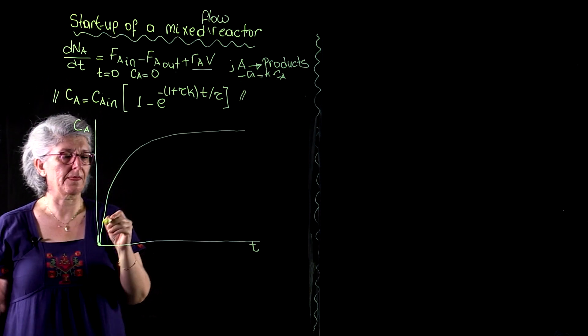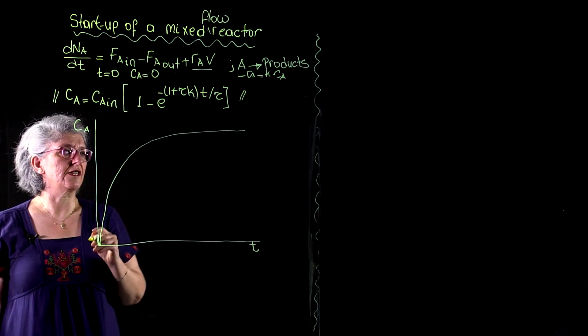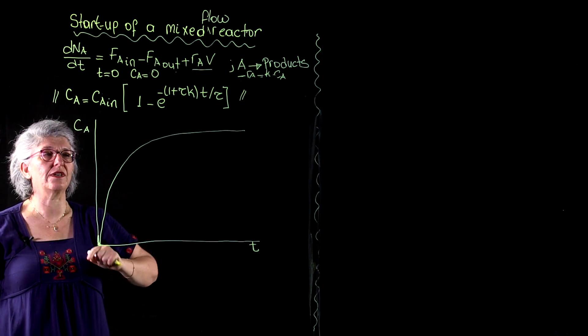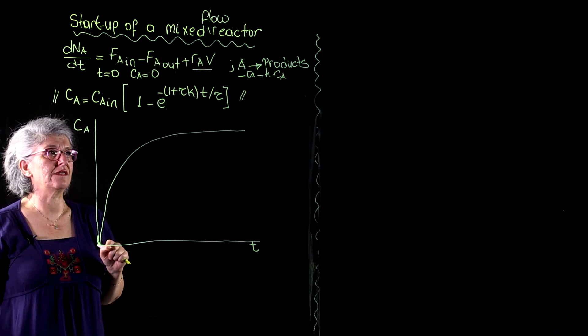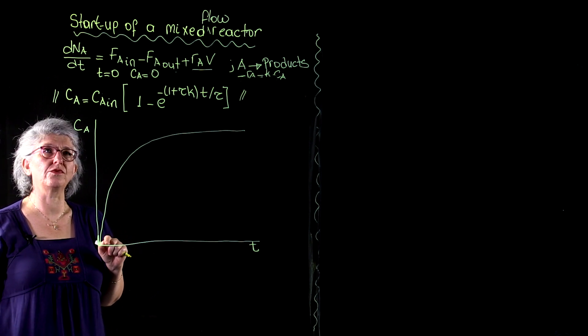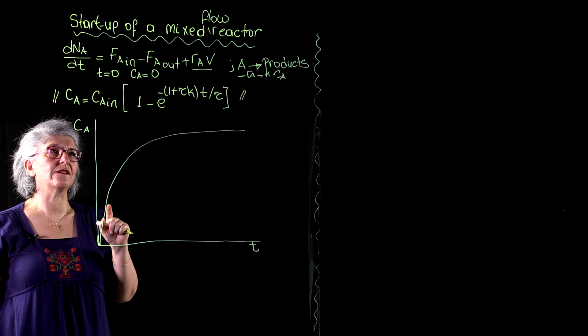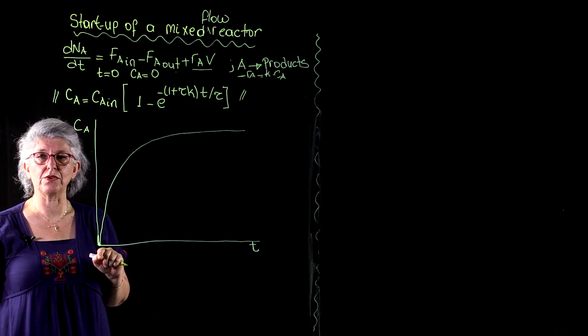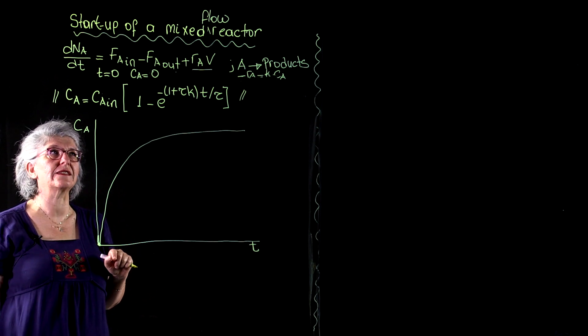And that evolution will have this kind of qualitative behavior. This is going to be the exponential evolution. So, your assignment is to generate as many curves as you wish to produce and see the effect of each of these parameters on the time evolution of species A concentration at the effluent.